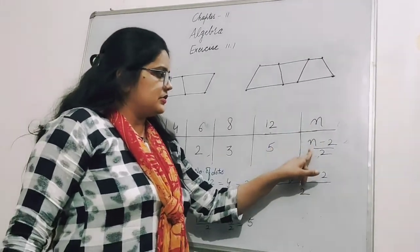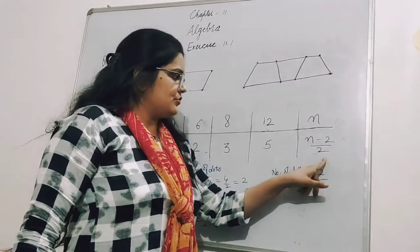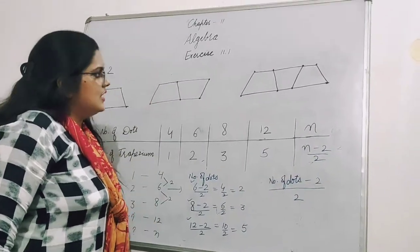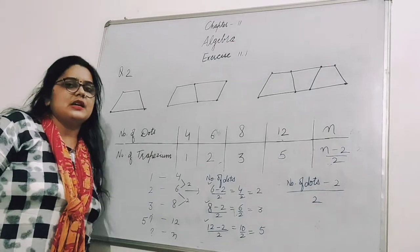Here number of dots is N, so it becomes (N - 2) divided by 2. Part B of this question, try to do yourself.